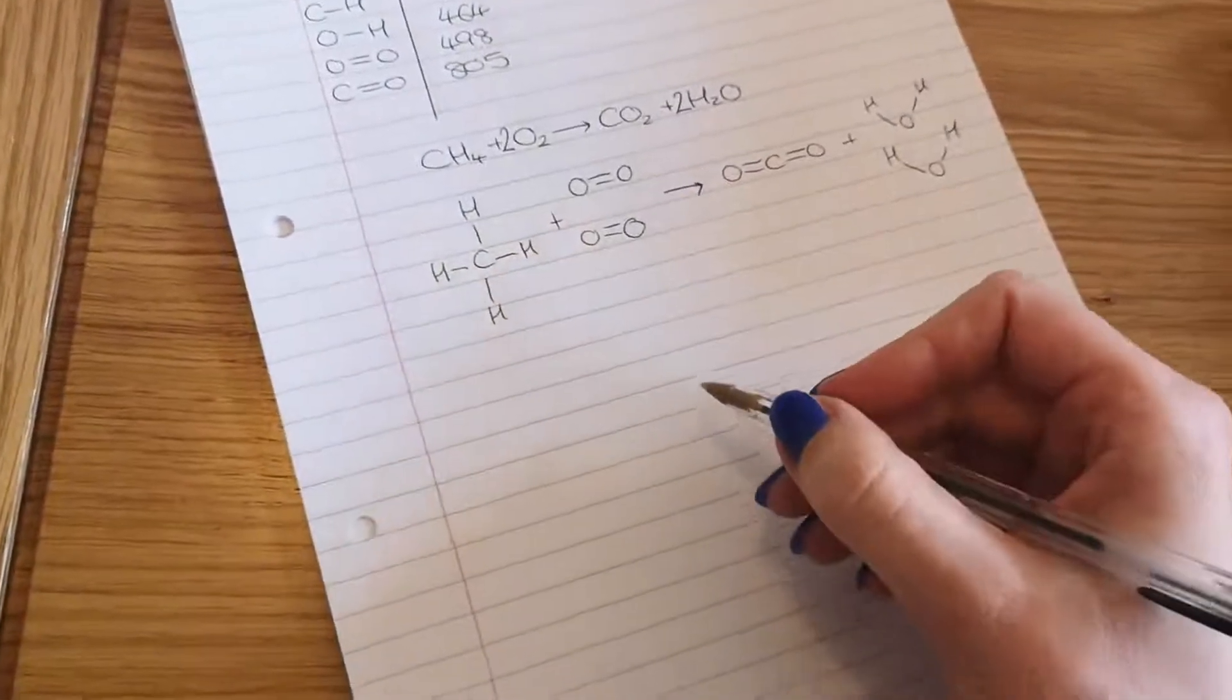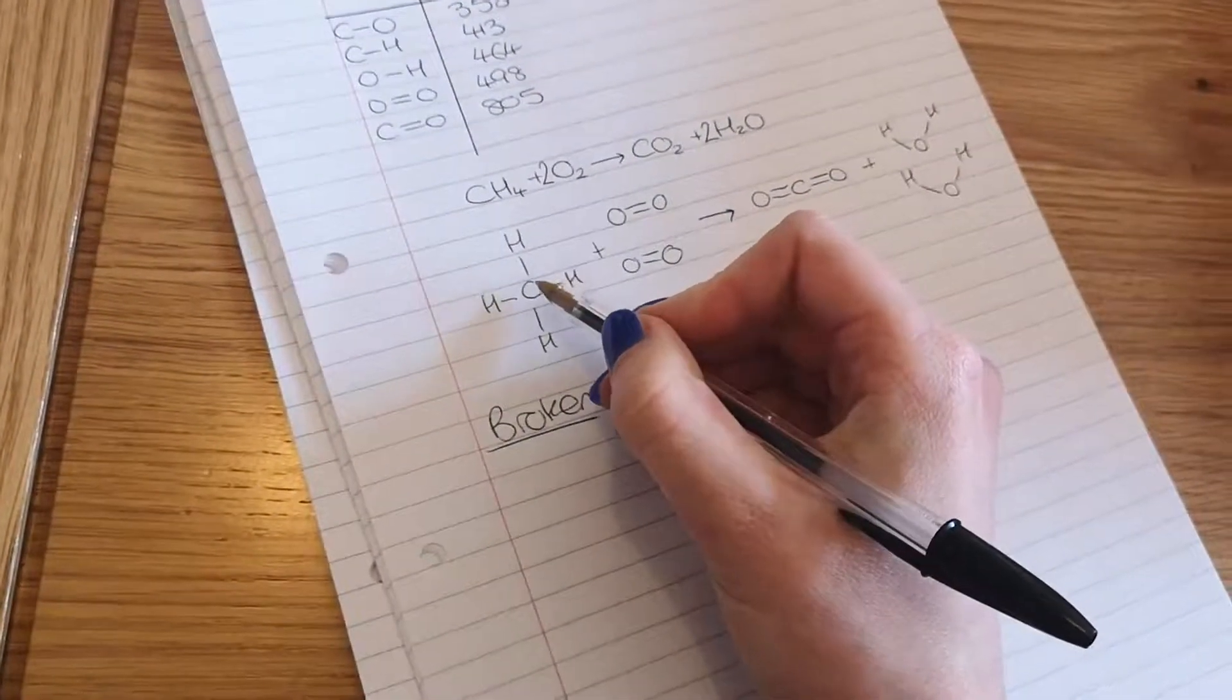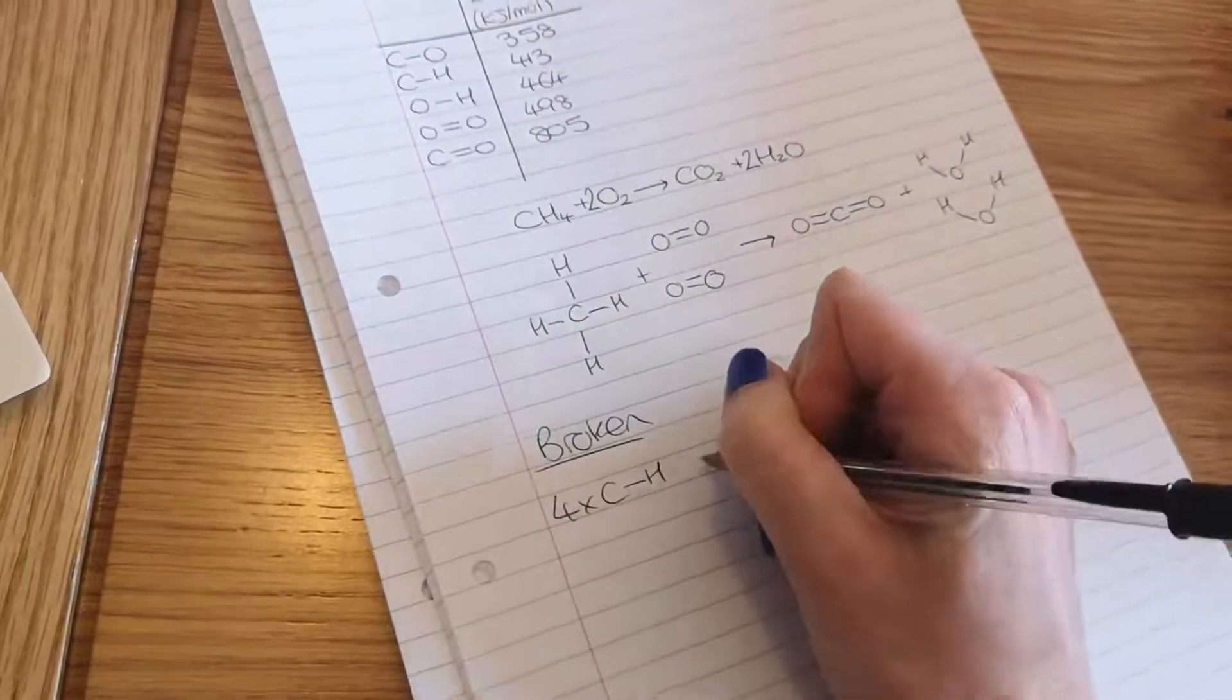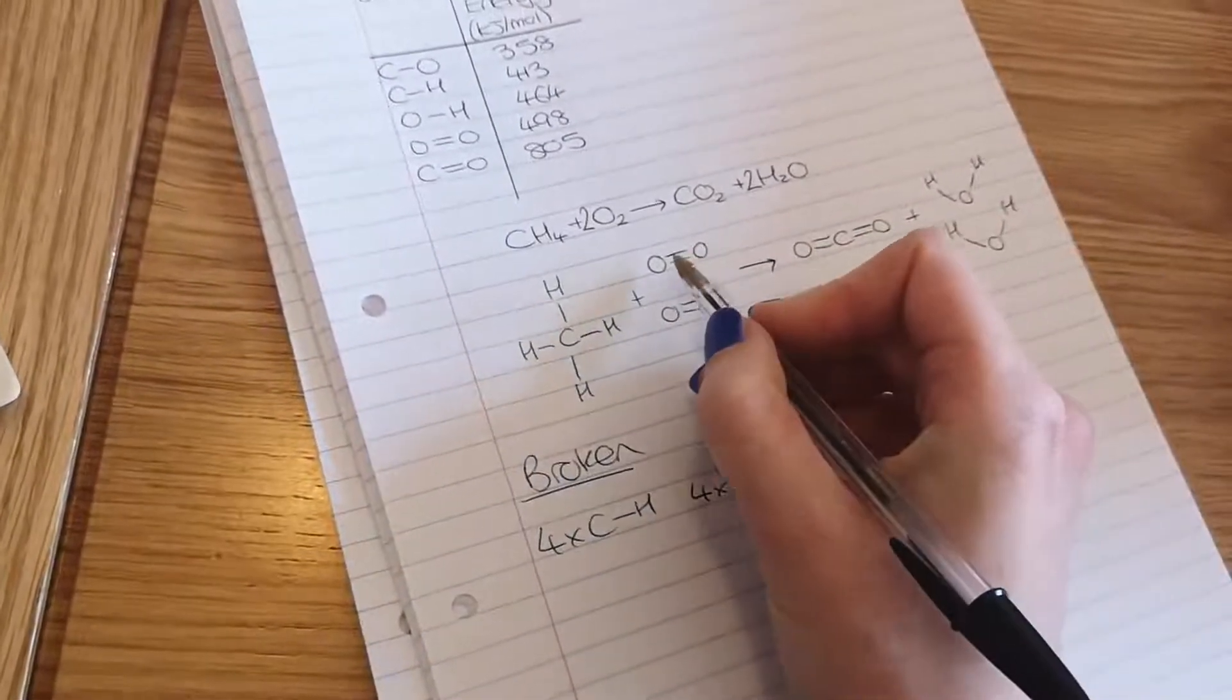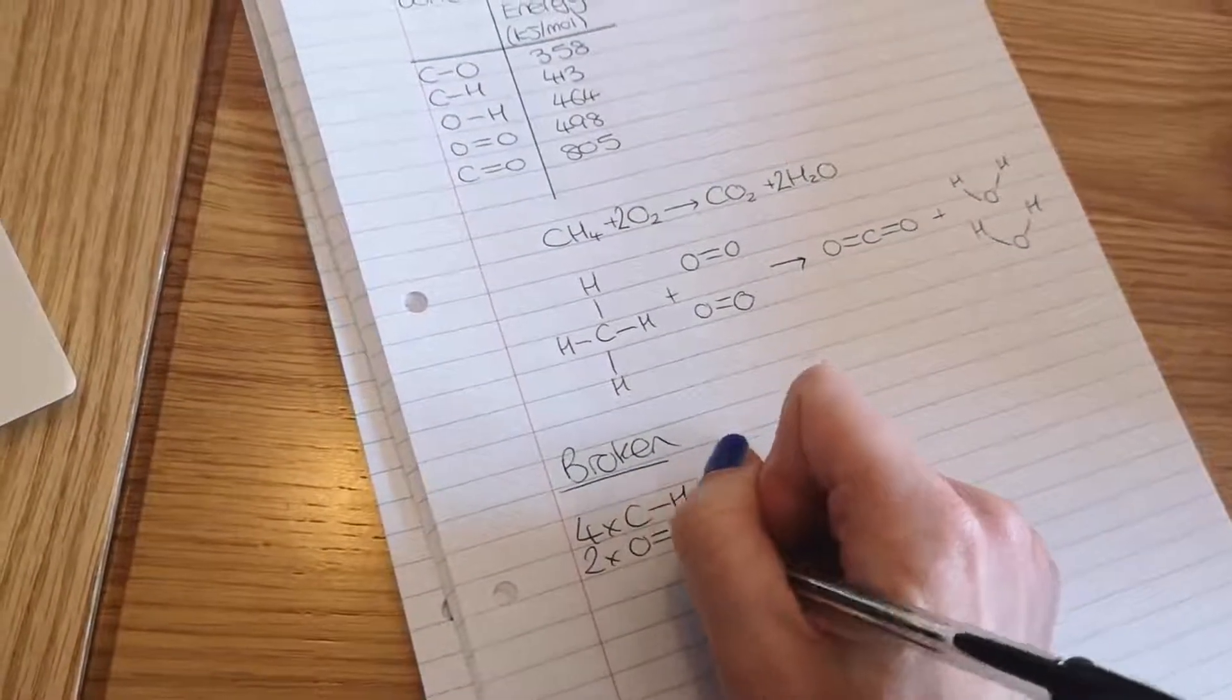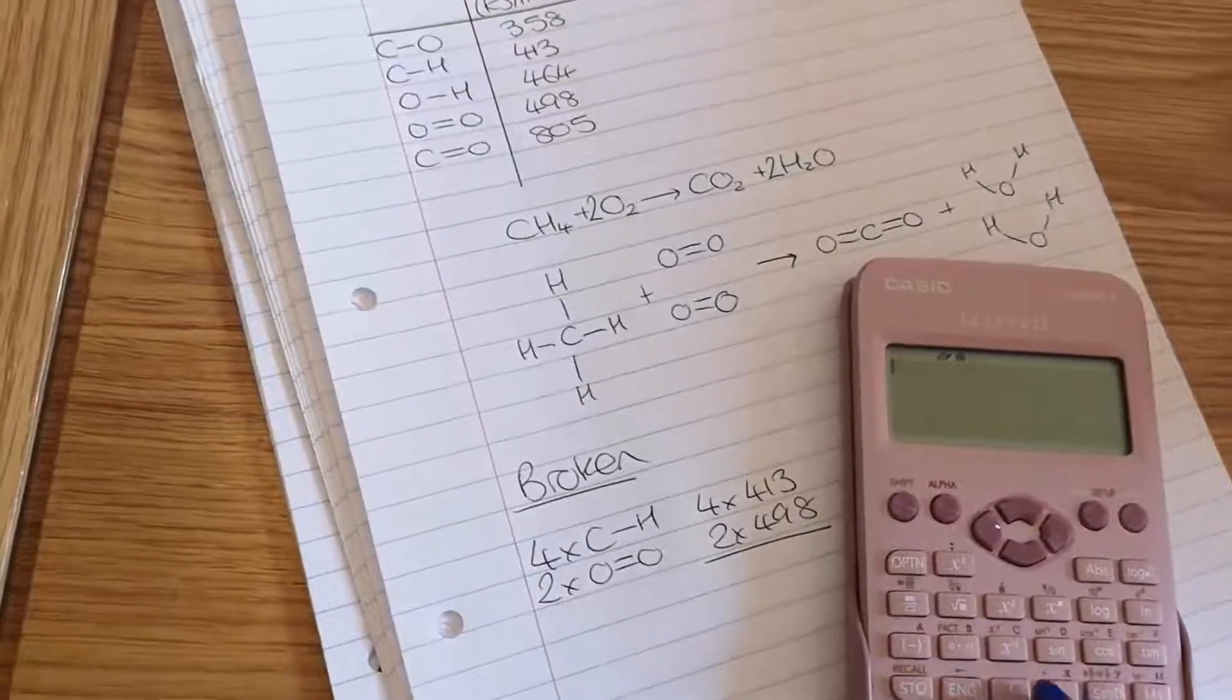So let's work out which bonds are broken. I've got four of these CH bonds - one, two, three, four - that is four times 413. I've got two of these double bonded oxygens which are 498, so what I will do is work that out on my calculator.